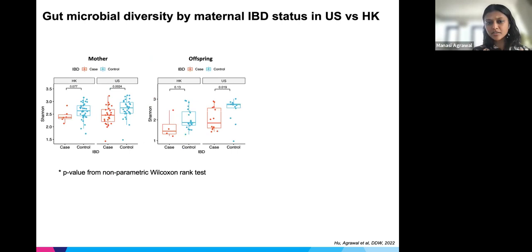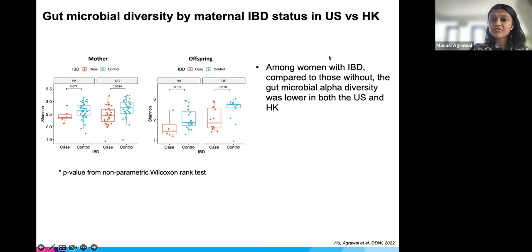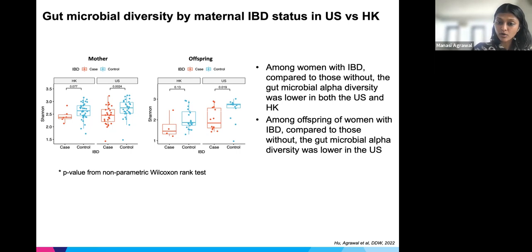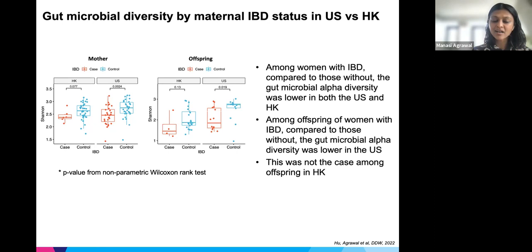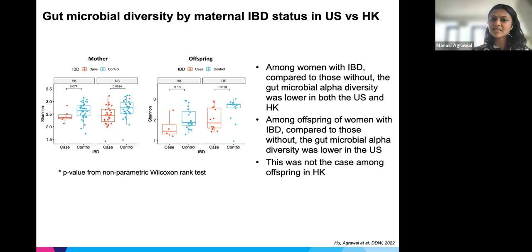We also compared microbiome and calprotectin signatures by country, looking at mothers and babies from Hong Kong and the US. Among women with IBD compared to those without, microbiome diversity was lower in both countries. Among offspring of women with IBD, diversity was even lower in the US compared to Hong Kong — reinforcing the idea that differences in our environment and country of residence play a role, consistent with the immigration data showing lower IBD risk in developing countries that increases upon moving to more developed ones.